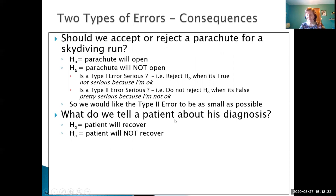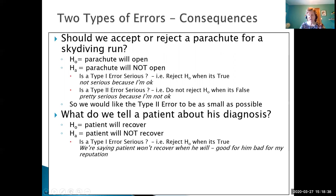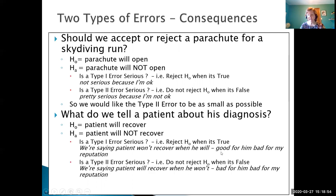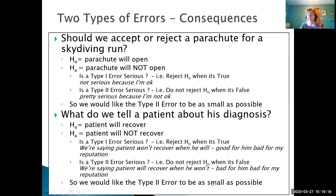Now, what do we tell a patient about their diagnosis? In a doctor situation, the null hypothesis is that the patient is going to recover; the alternative is that they're not. A Type I error — we reject that the patient is going to recover when they actually do — is good for the patient in some respects, though their trust in the doctor may go down a little. A Type II error — we don't reject the null hypothesis but the patient actually does not recover — is bad for the patient and their family, and also bad for the doctor's reputation. In this case again, we would like to control our Type II error to be as small as possible.